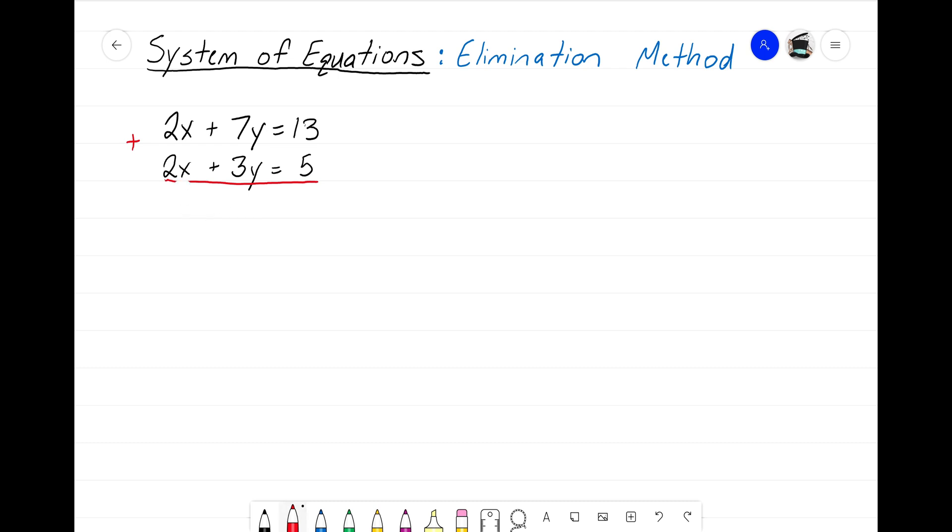So that means that we need to manipulate one of the equations first before we combine them. And here's what I mean by that. It would be really nice if one of these x's here were negative, right? If I had this bottom equation as a negative 2x, then when I did 2x plus negative 2x, they would turn into 0x and the x's would drop out.